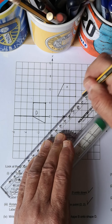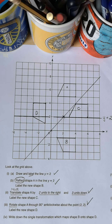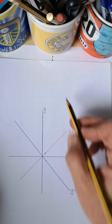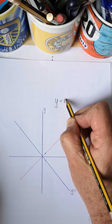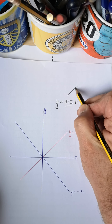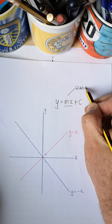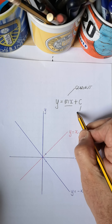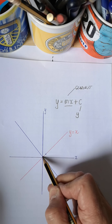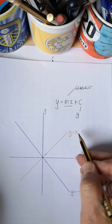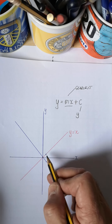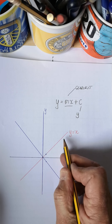Now we're going to rotate. This one is sometimes a little bit more tricky. We're going to go back to shape A. Shape A needs to be rotated through 90 degrees anticlockwise. Remember, a clock goes clockwise; anticlockwise is the opposite direction. Further instructions give us the point two, two — so remember, along the passage first: there's two and there's two. We're going to rotate it 90 degrees around that point.